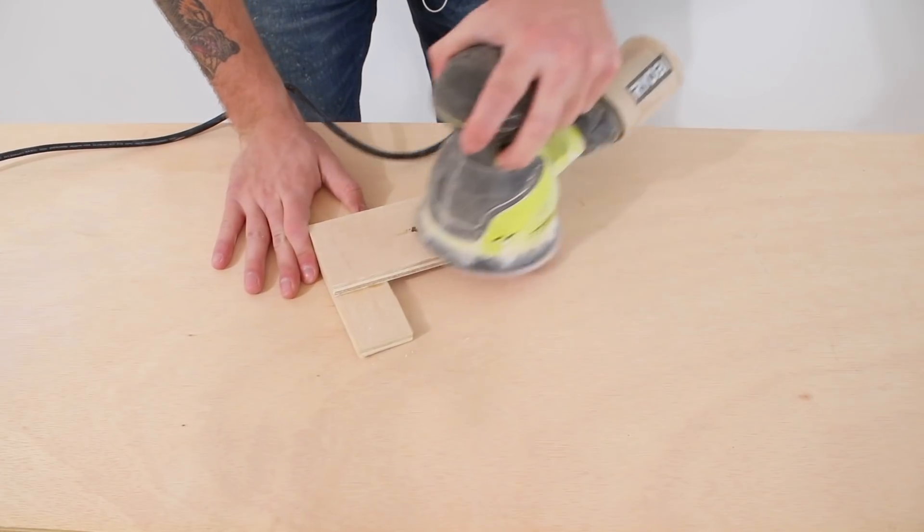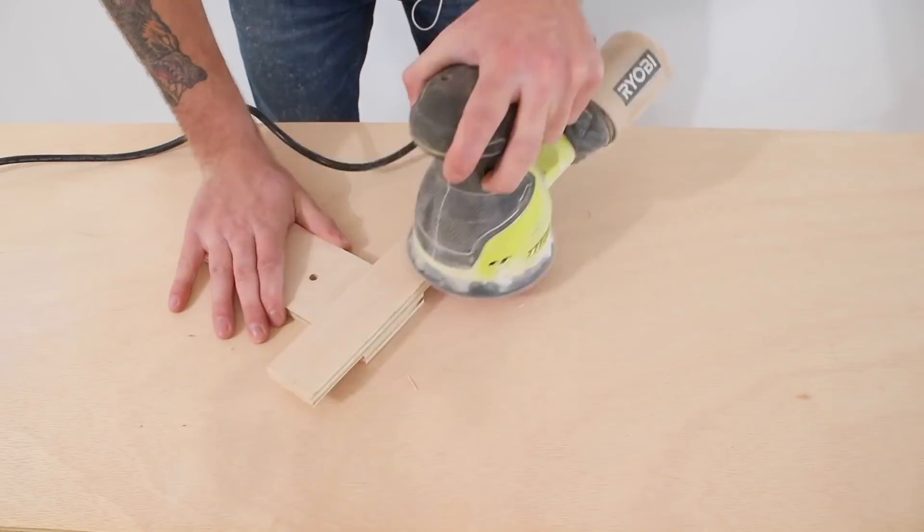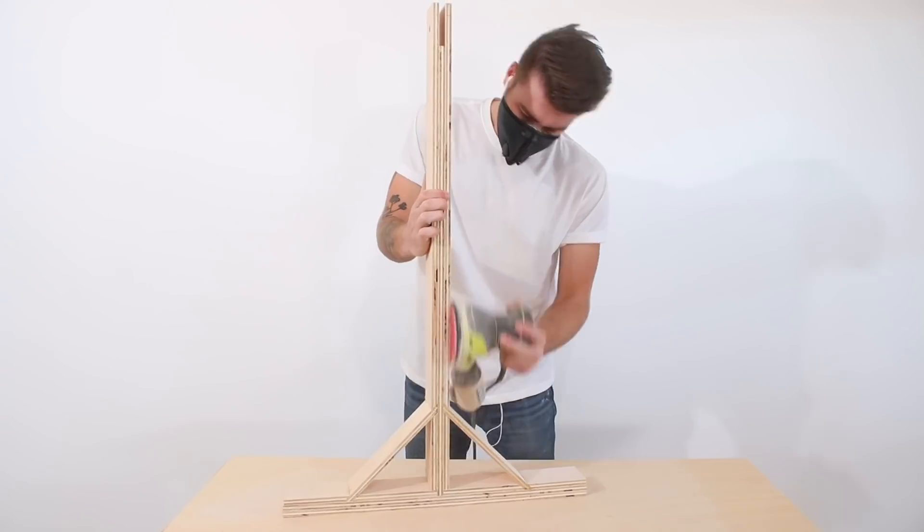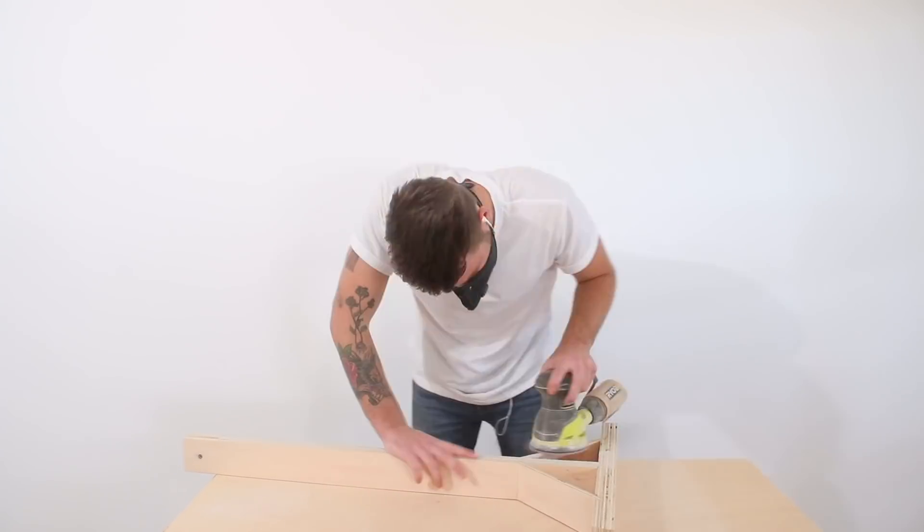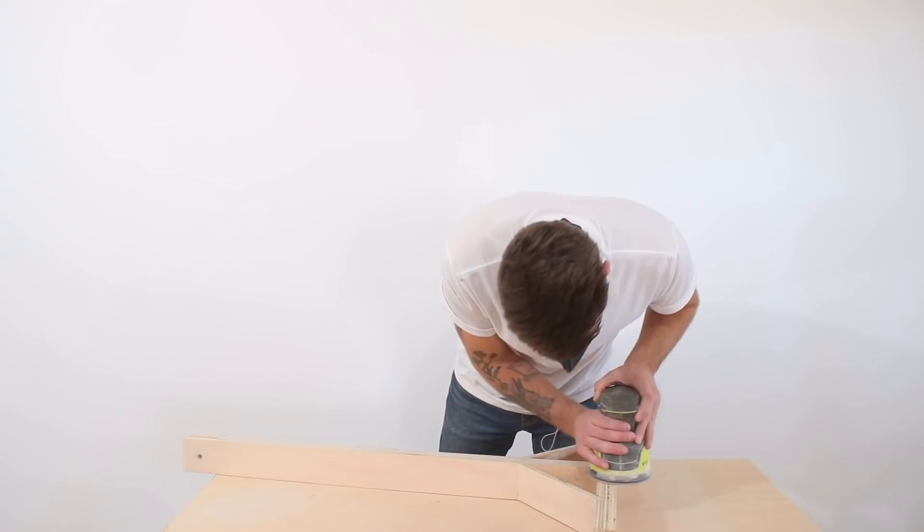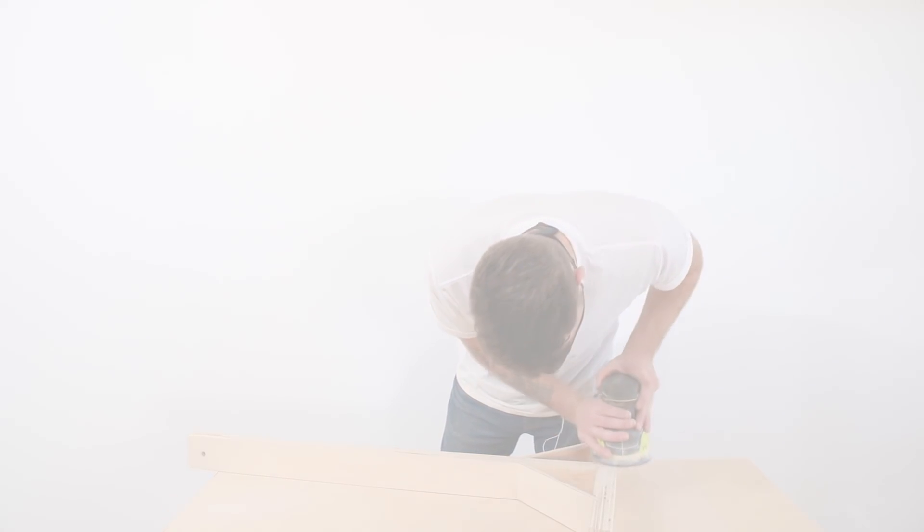I used 150 grit sandpaper to clean up all of the faces and the edges of all of my pieces, especially the posts and the stretcher where I had to glue up multiple pieces. It took a little work but was totally worth it and after that the camera mount is done.